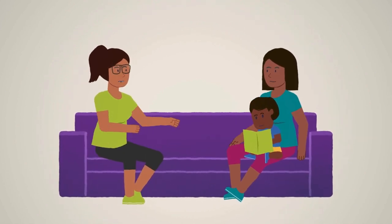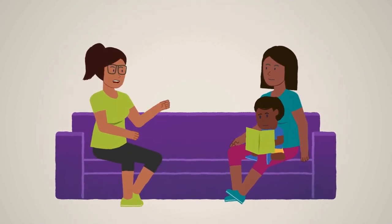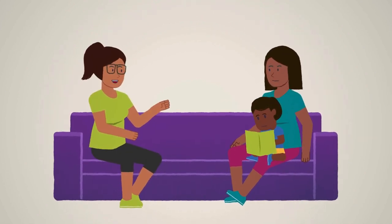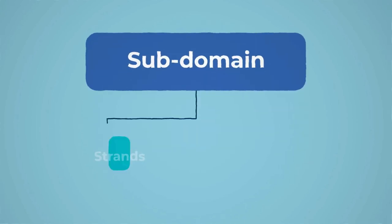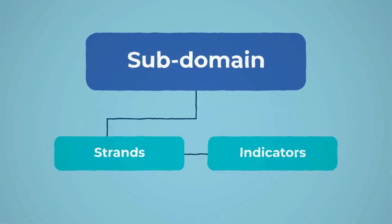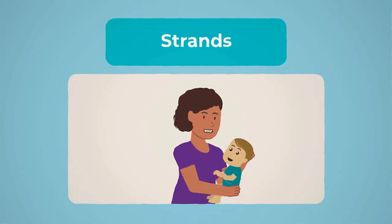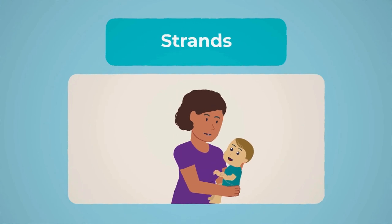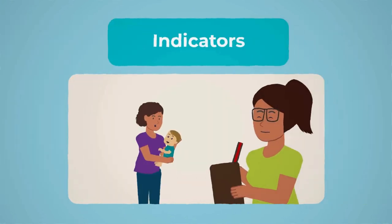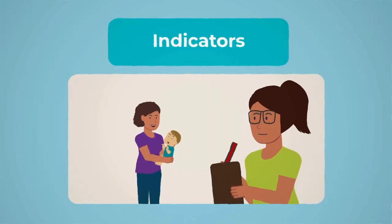By partnering with families, this valuable learning can be nurtured further. Within each subdomain there are strands and indicators. Strands describe the capabilities that change as children learn and develop, and indicators describe the progress you may observe.